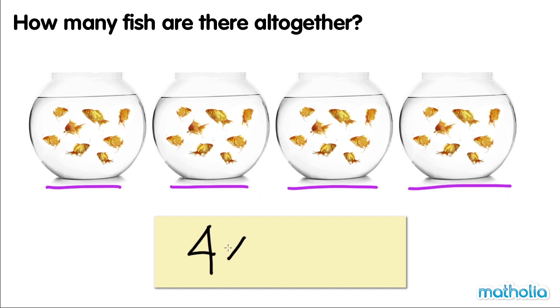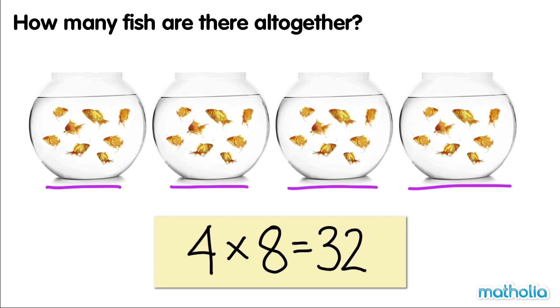Four times eight equals thirty-two. There are thirty-two fish all together.